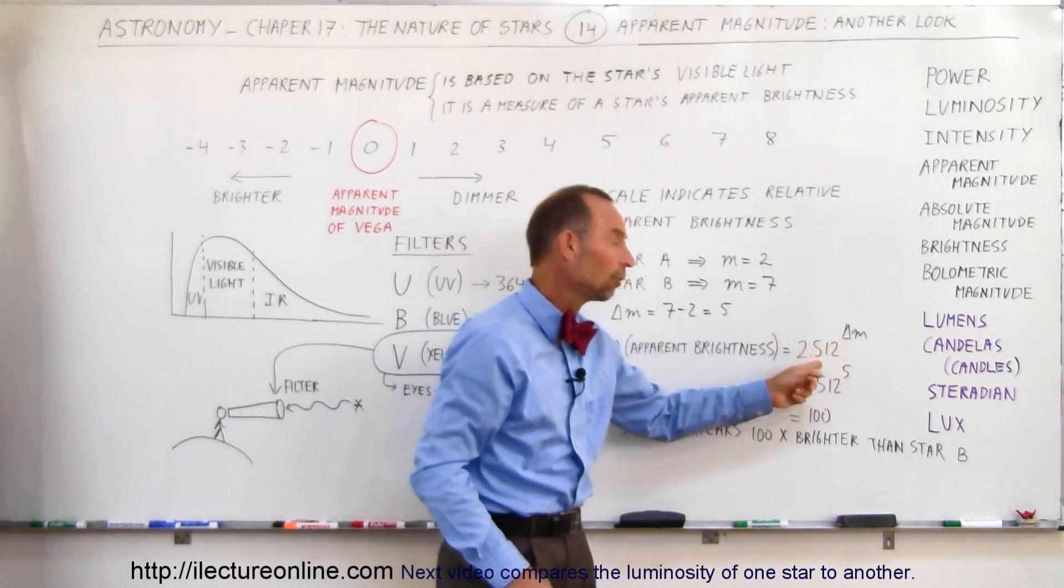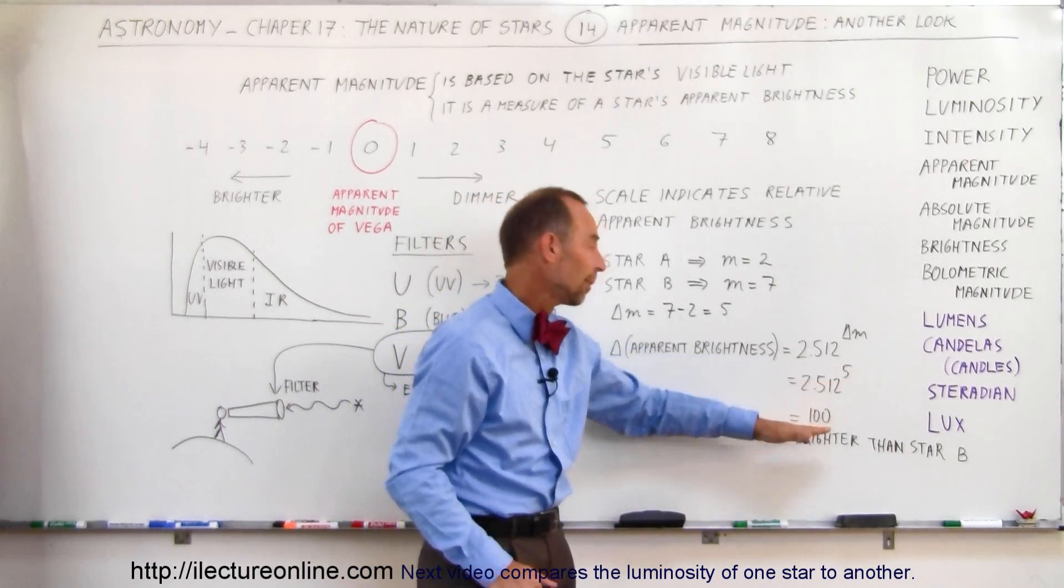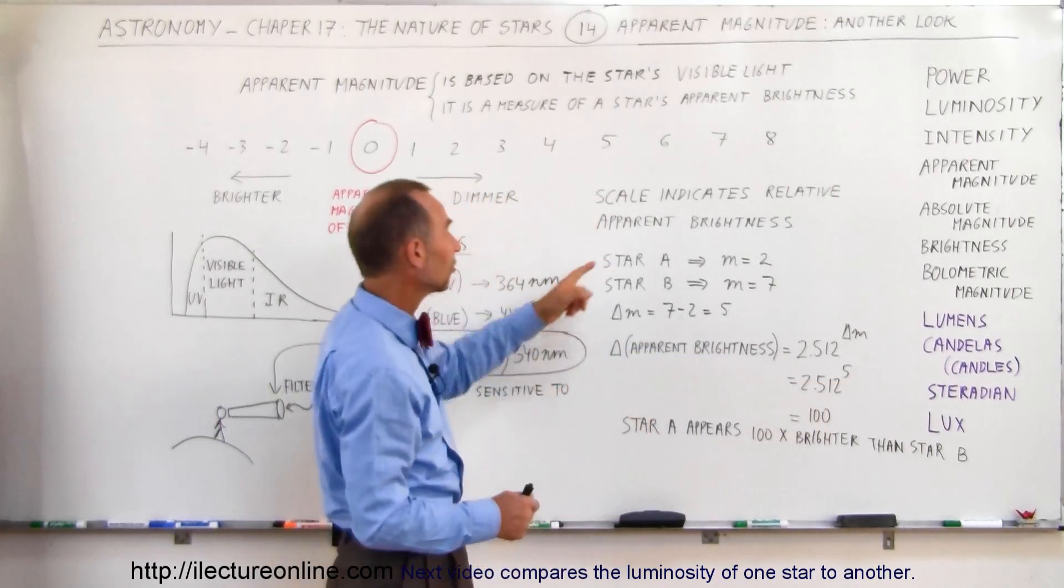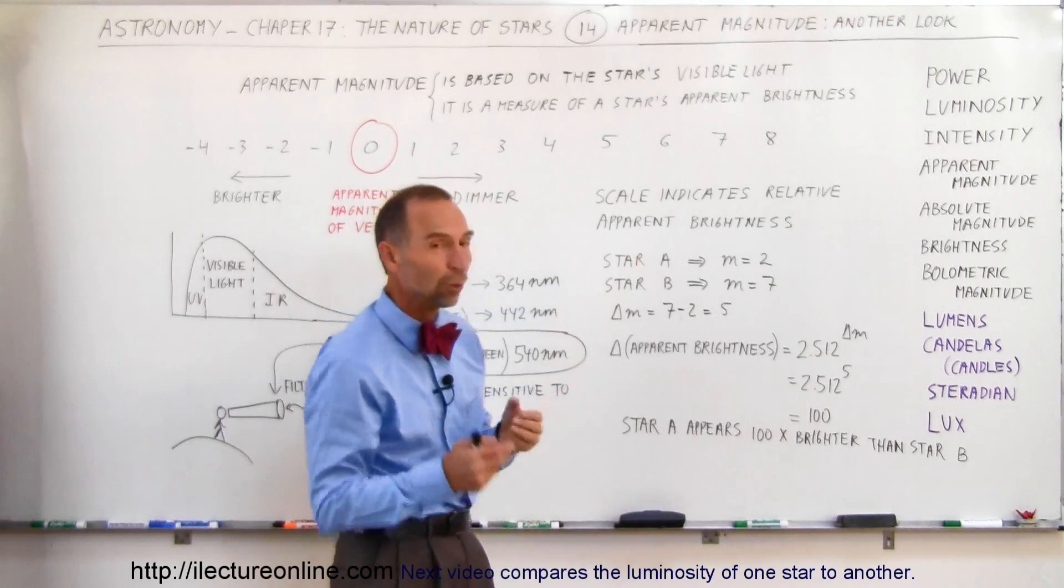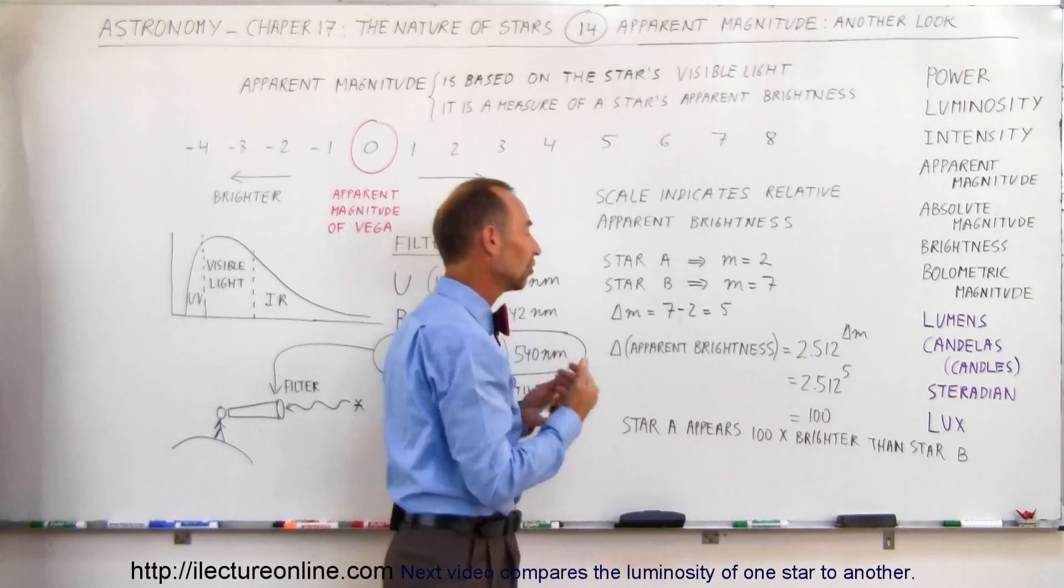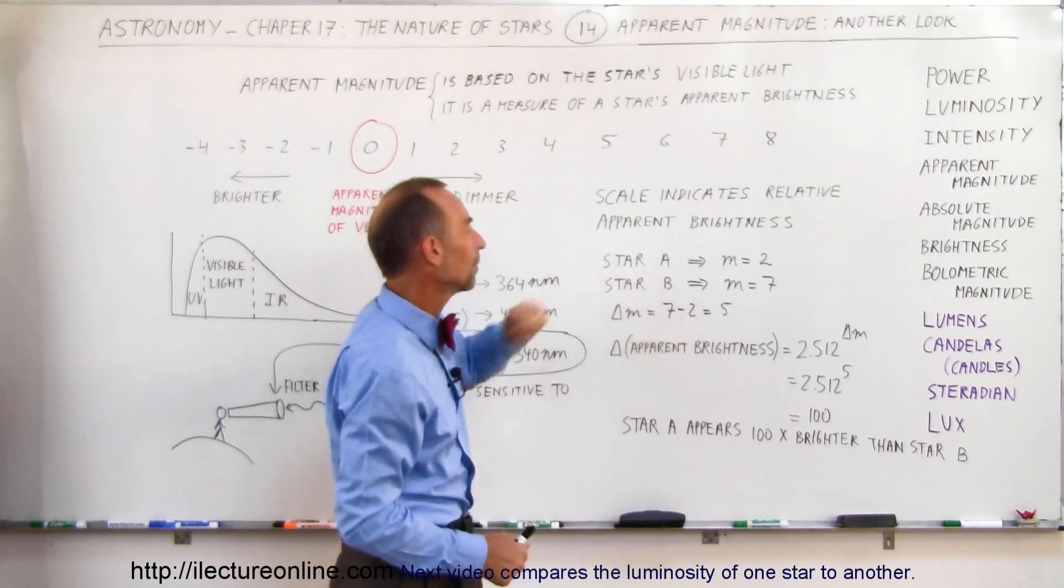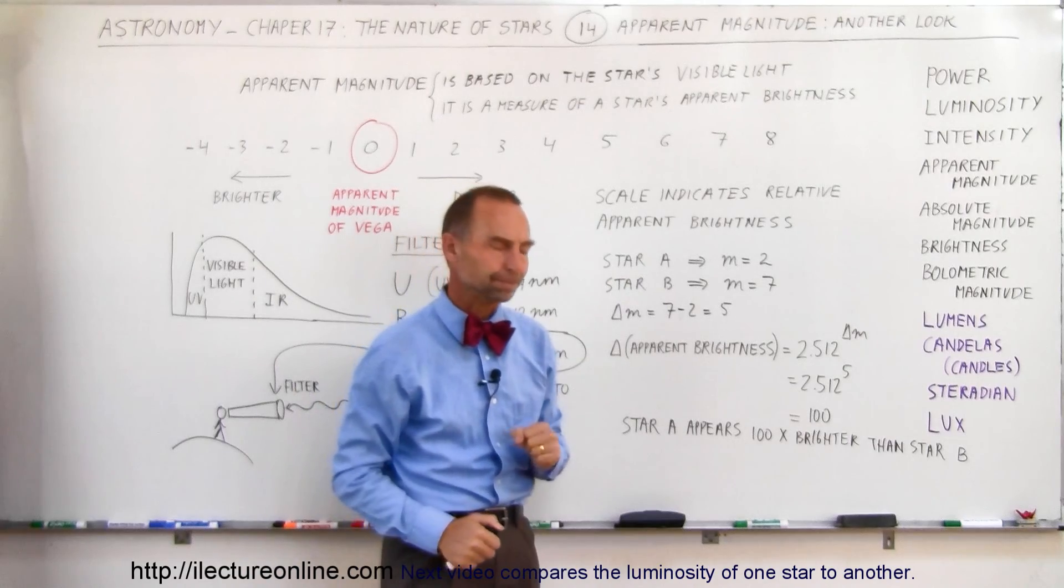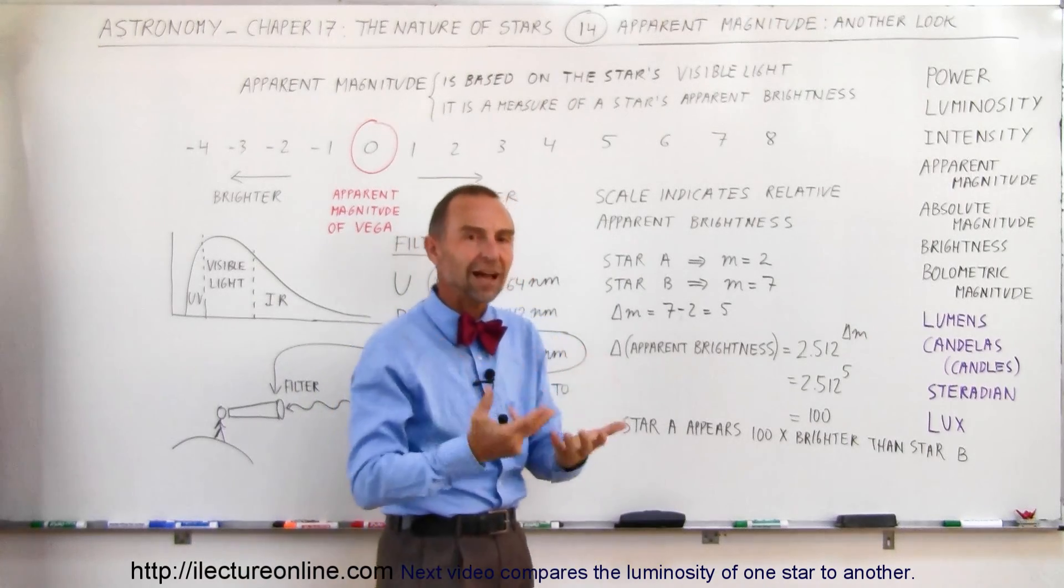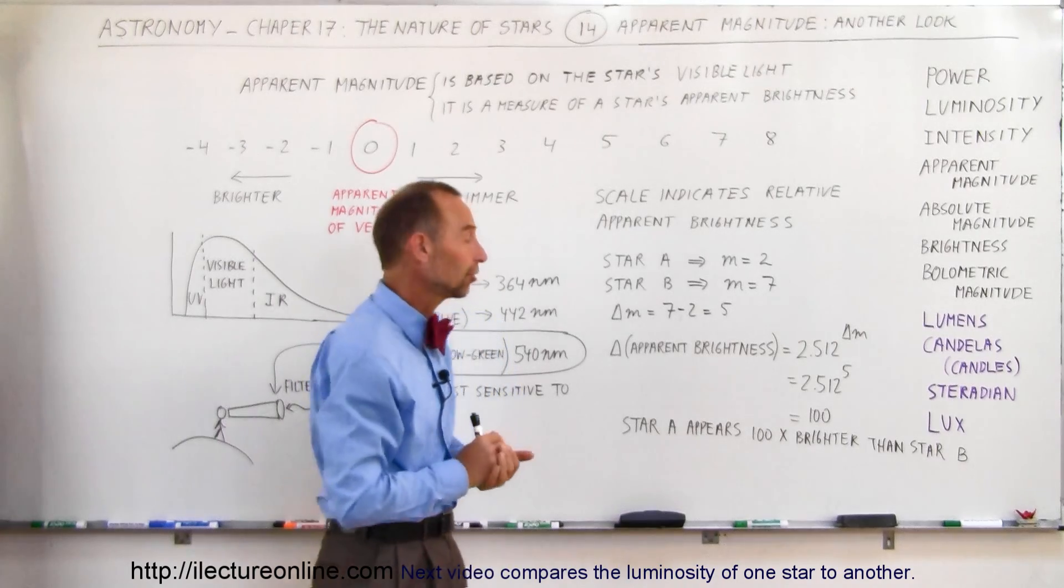and we then use that for the exponent of the number 2.512, 2.512 to the fifth power is 100, which means that star A is 100 times brighter, or at least it appears to us to be 100 times brighter than star B. So therefore, we say the apparent brightness of star A is 100 times the apparent brightness of star B, and it is 5 magnitudes brighter than star B.